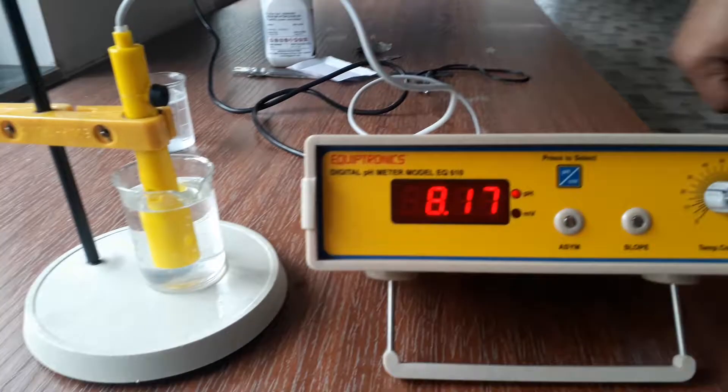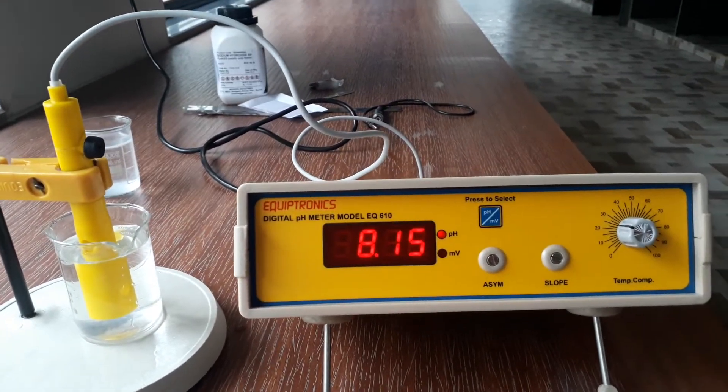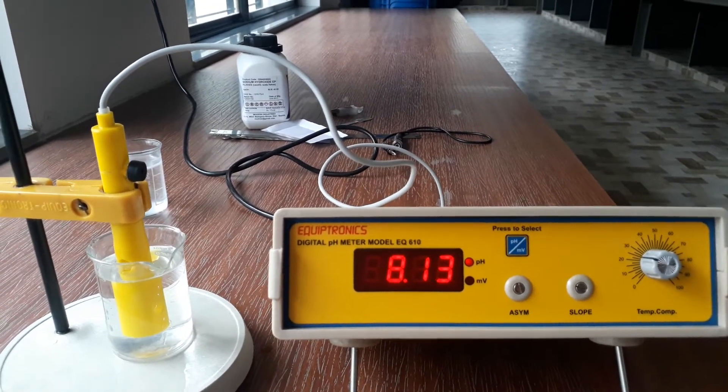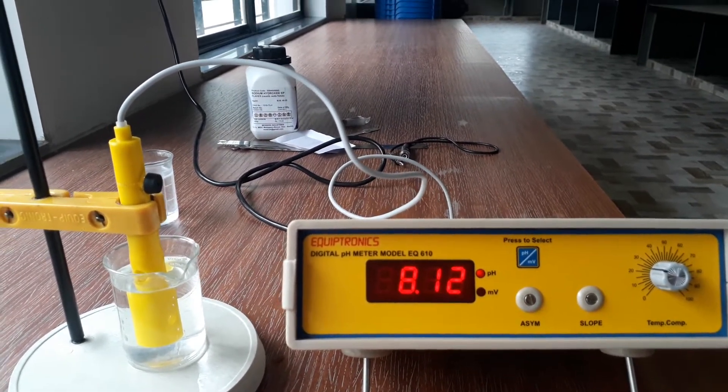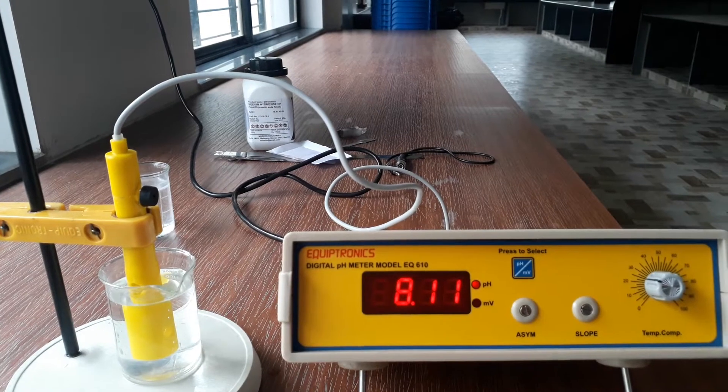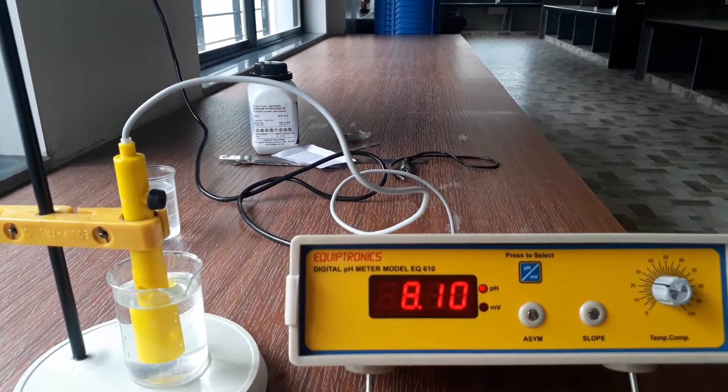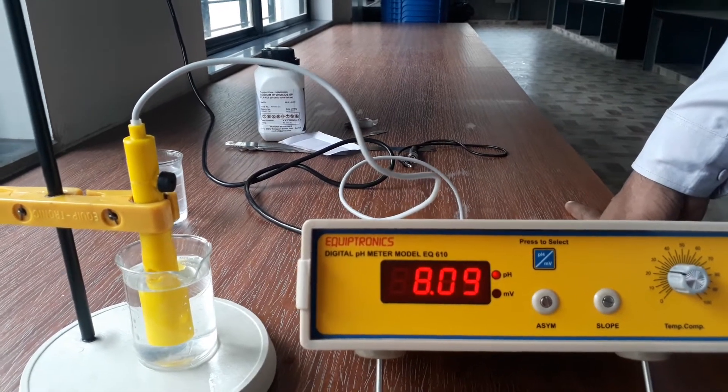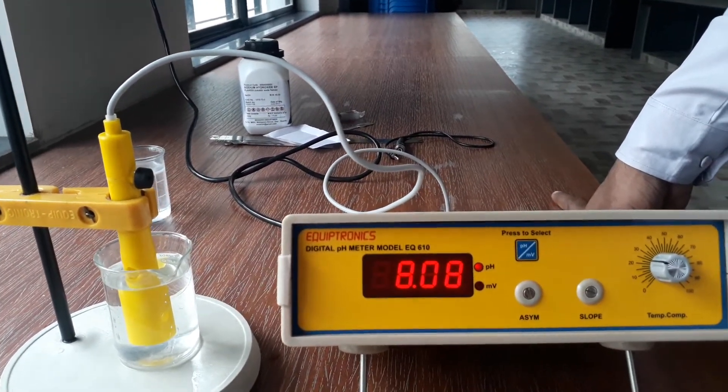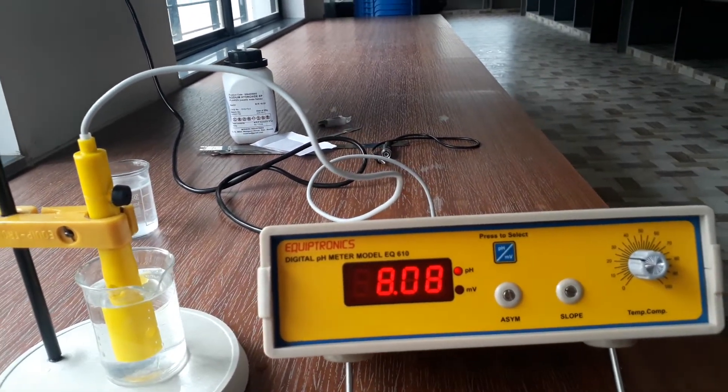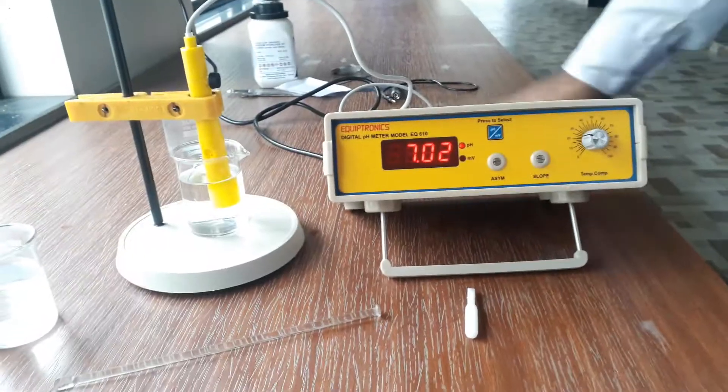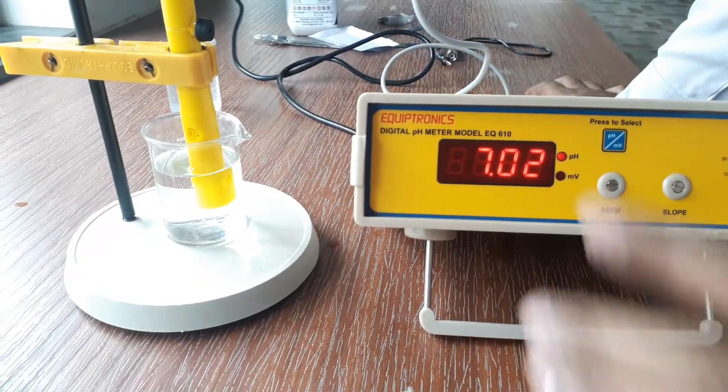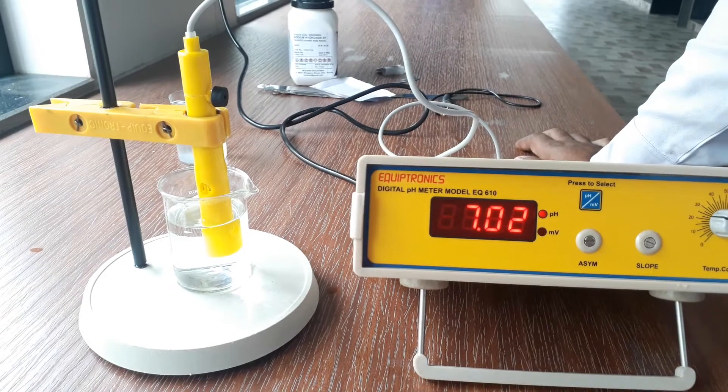You can see the pH value has started to decrease. So it should come nearly up to 7. After some time we will see it will become 7. Now you can see the pH value on this pH meter is 7.02, means nearly 7. So distilled water pH is 7 which is recorded exactly in the pH meter.